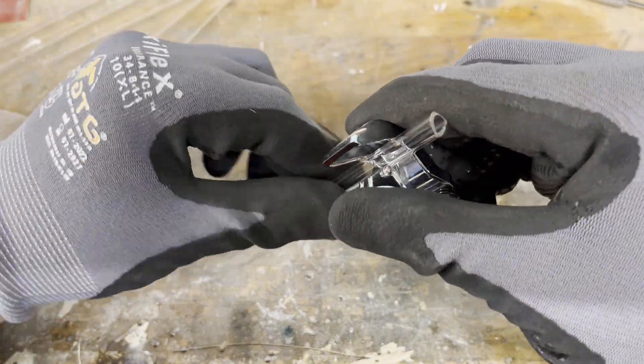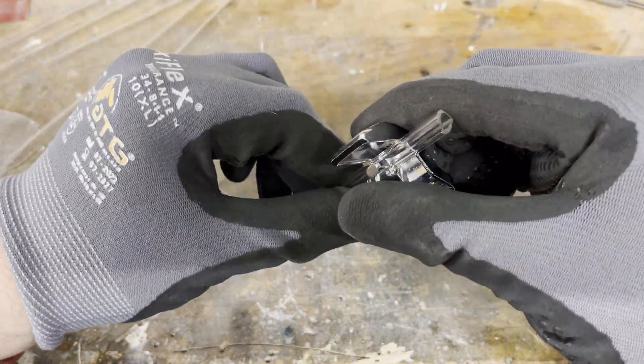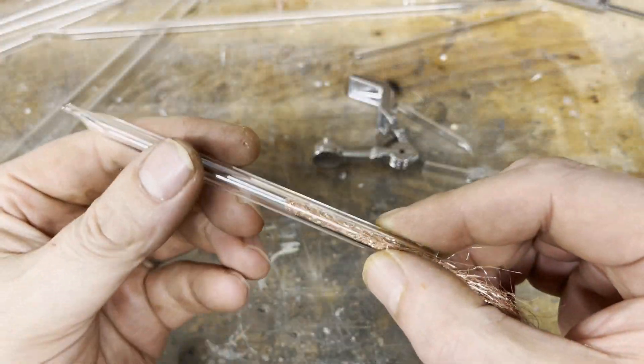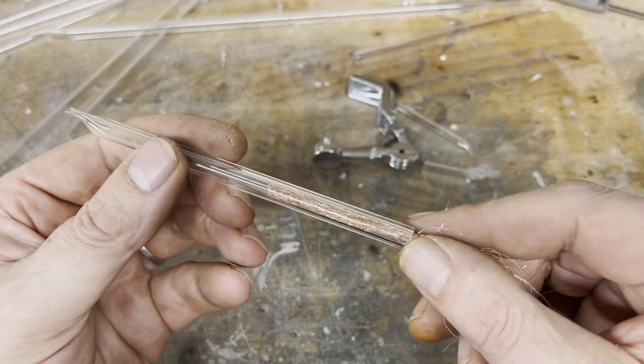First I made the flame tube. Copper wool is used as a flashback arrestor.